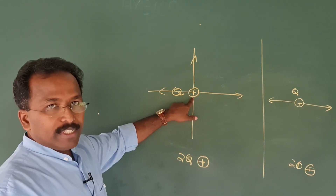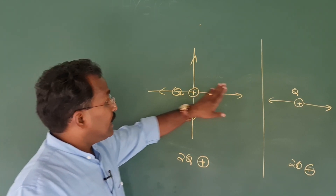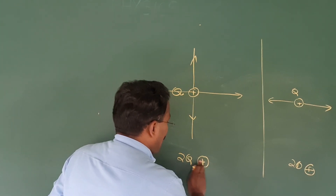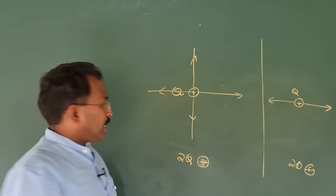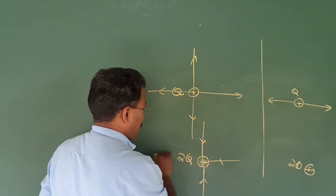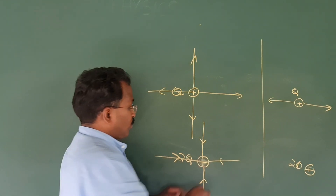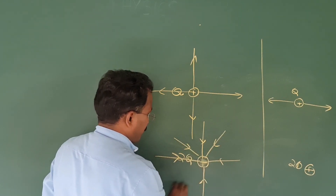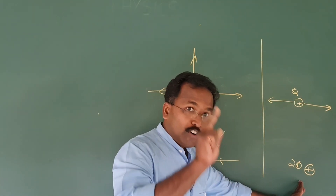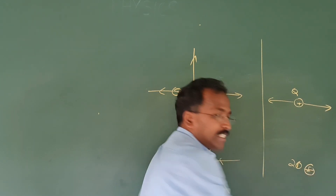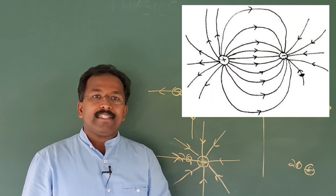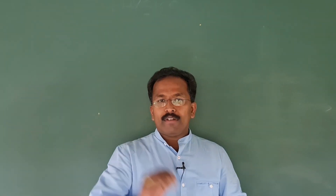If instead of a positive charge I have a negative charge, the direction of the lines will be reversed. For a negative charge 2Q, the lines must be oppositely directed — pointing inwards. For a negative charge Q, it should be four lines directed towards the charge. Now you have to copy the electric field lines around a dipole from your textbook. Before going to our next topic, we need an idea about area vector.